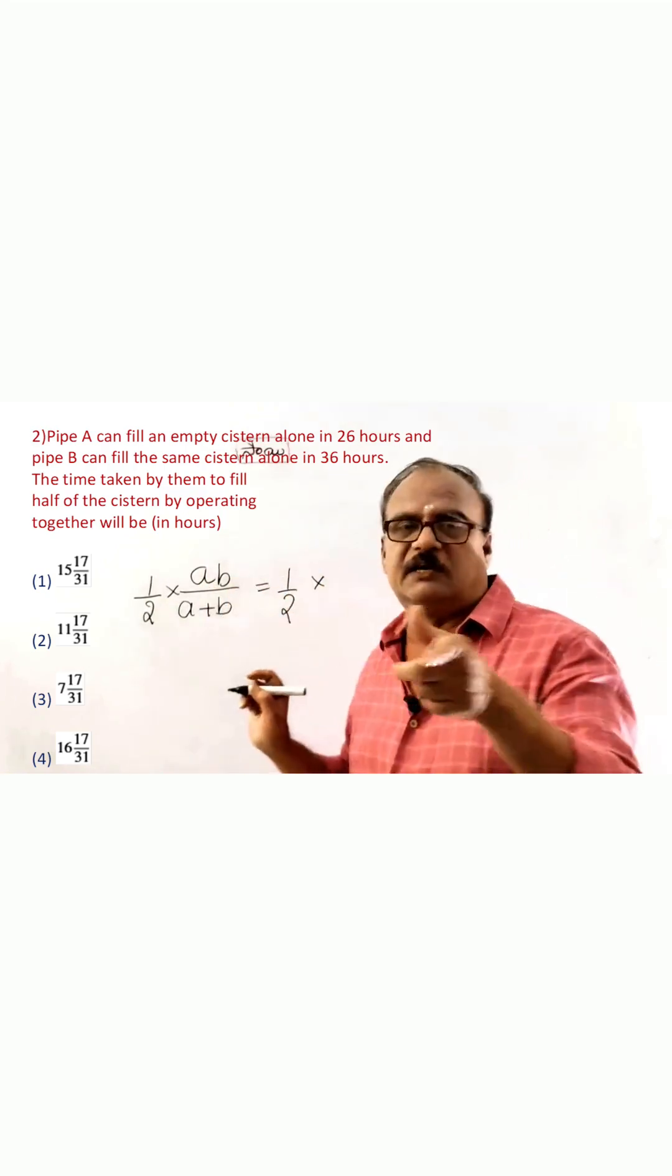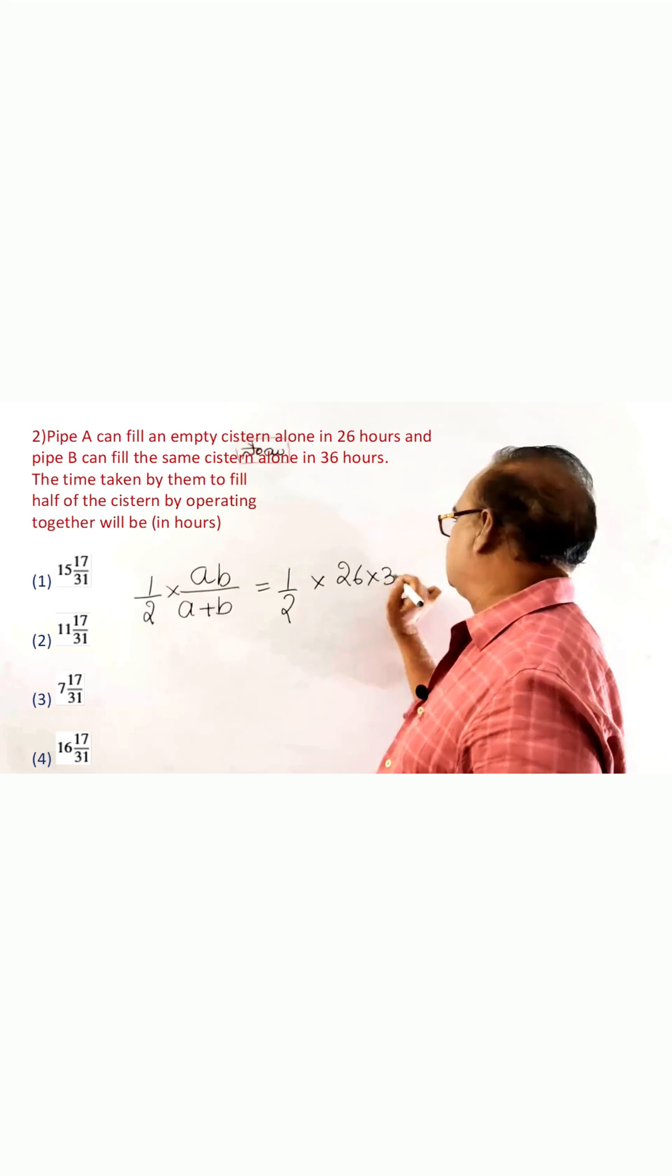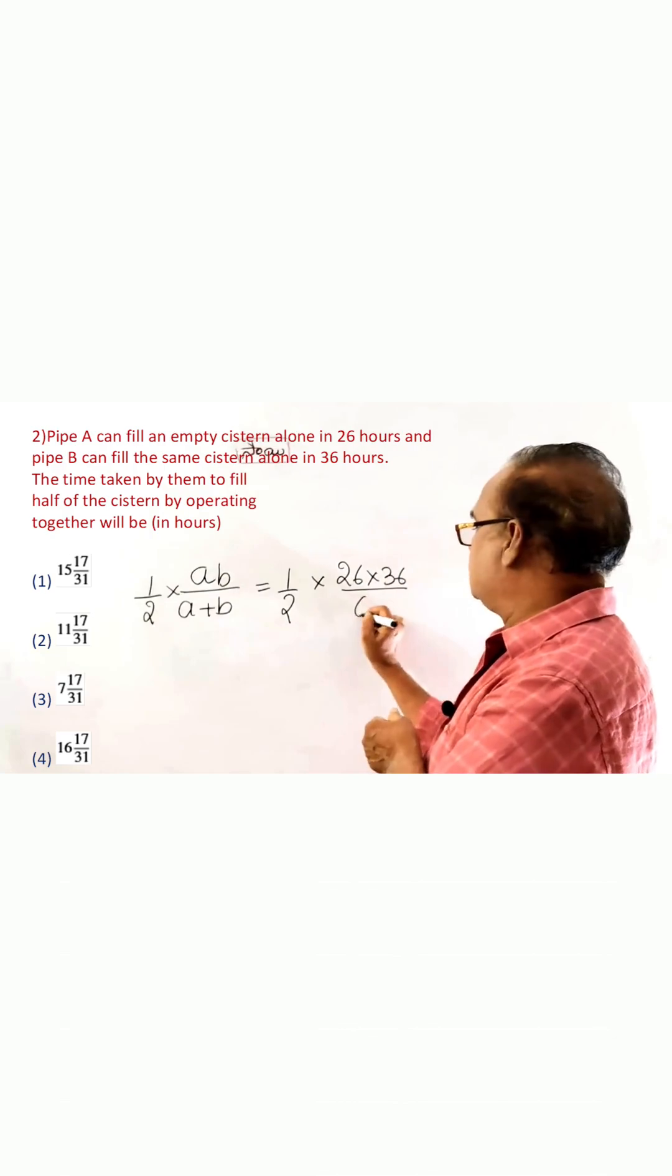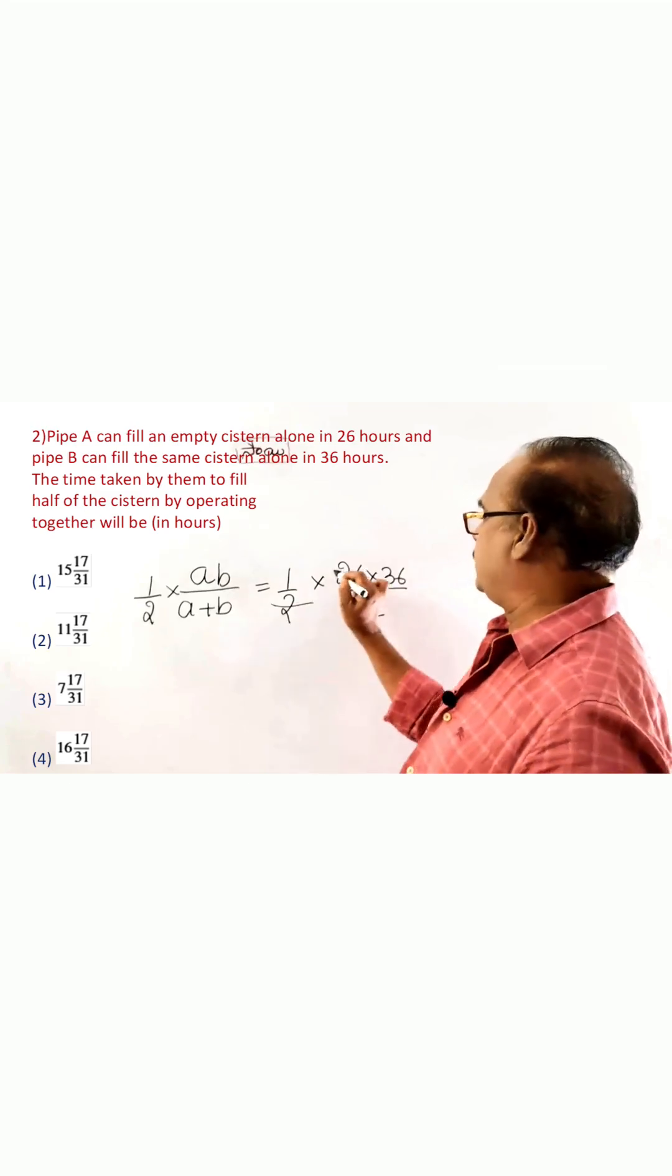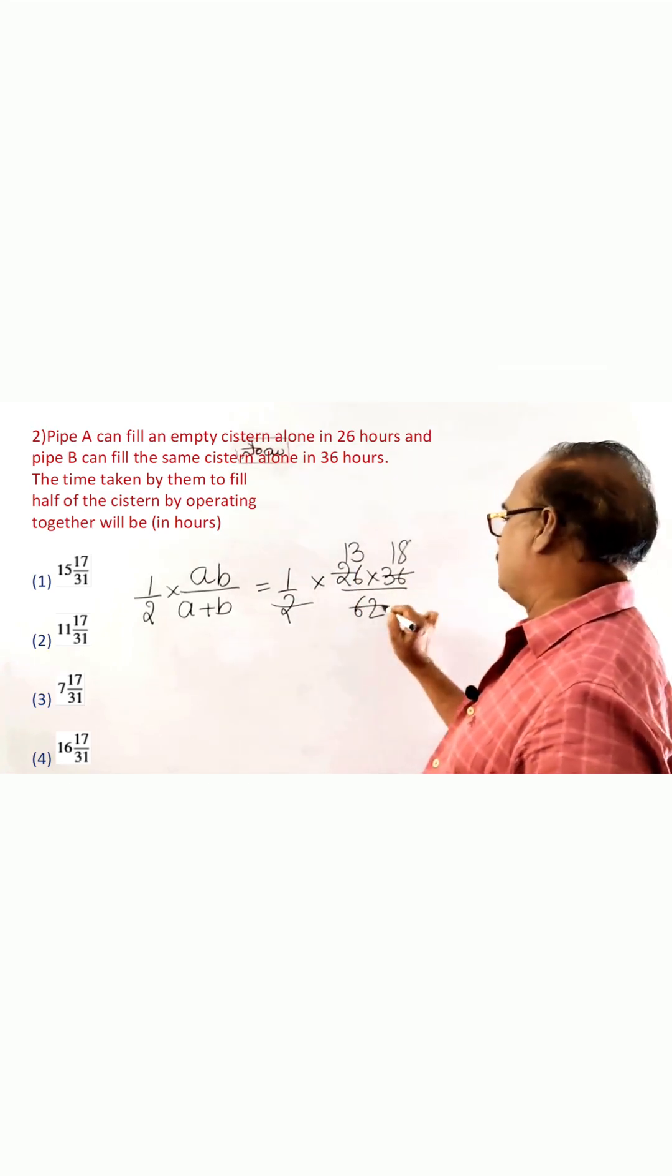26 into 36 divided by the sum of the 2, 26 to 36, add this, 62. Now you cancel it all. 2 the intolo 13 times, 2 the intolo 18 times and 31.